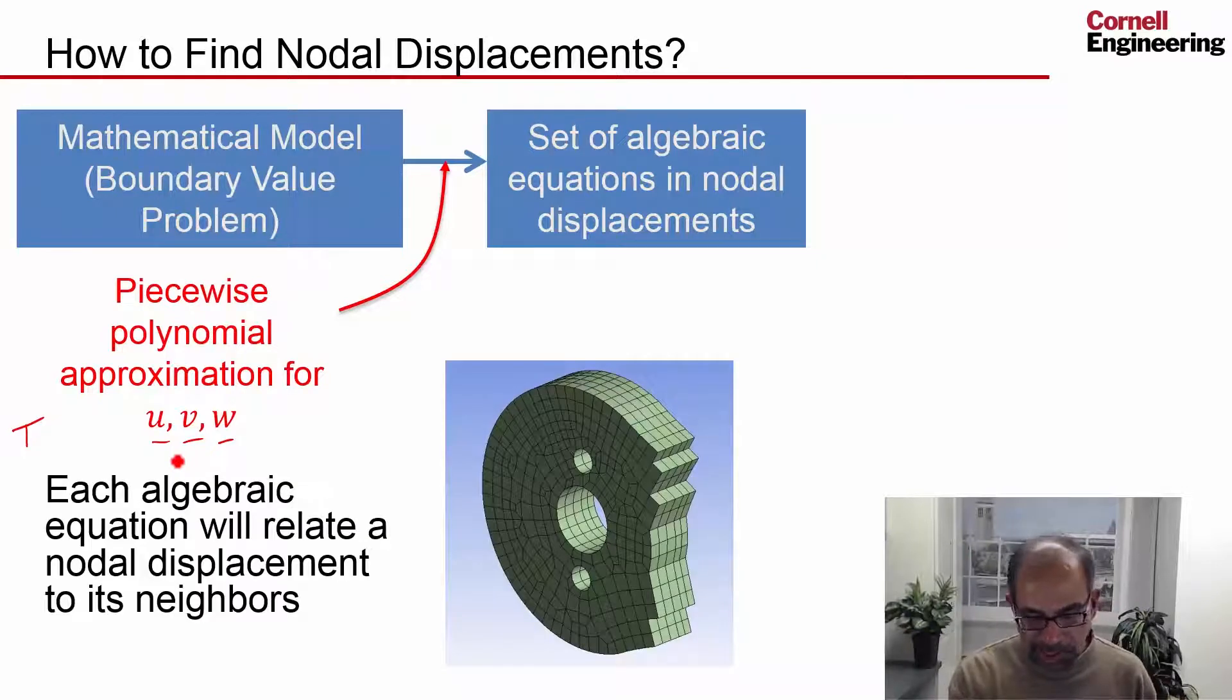Each algebraic equation will relate a nodal displacement to its neighbors. So let's say a node has 40 neighbors, but each of those neighbors has three values. So it has to relate it to 120 values. That's where shape functions come in. It gives you an elegant and methodical way to do that bookkeeping in terms of how you relate the values of the nodal displacements. As far as the finite element solver is concerned, it all reduces to writing relationships between one node to its neighbors.